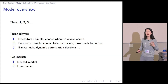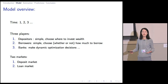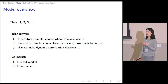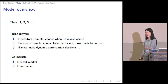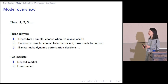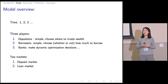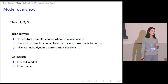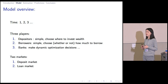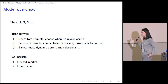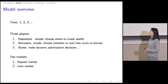Let me briefly summarize our model setup. Our model is an infinite horizon dynamic model with three key players. We have the depositors, who choose where to invest their household wealth. We have the borrowers, who choose whether or not to borrow and whom they're going to borrow from. For both depositors and borrowers, they make relatively simple intra-period optimization decisions. The richness of the model lies within the banking sector, which involves making more complicated dynamic decisions on how much loans to initiate, how much deposit to intake, as well as the capital structure decision. We have two markets: the deposit market and the loan market.